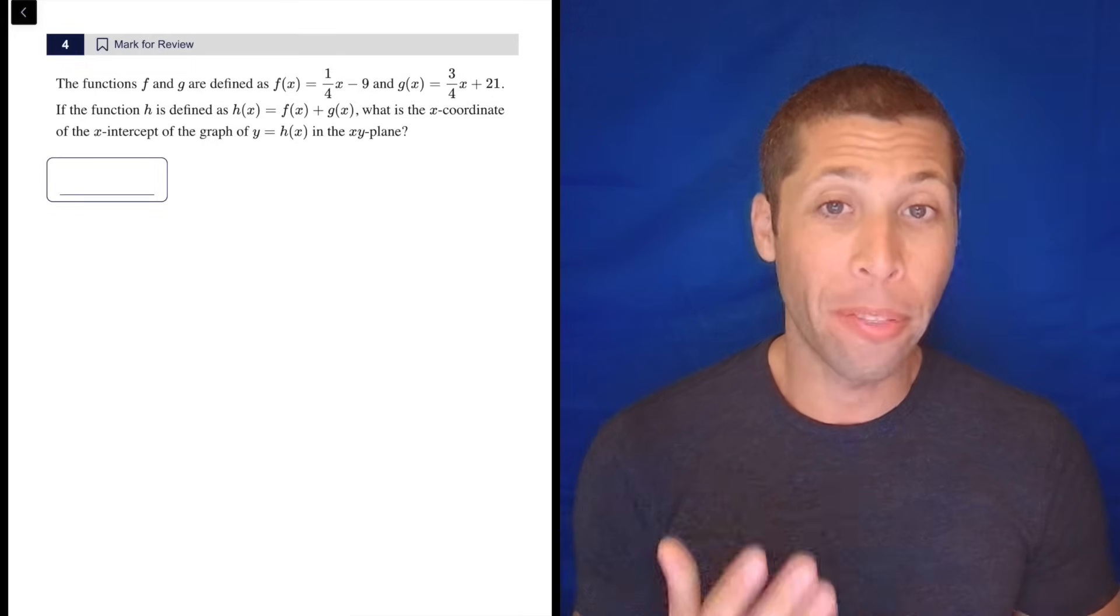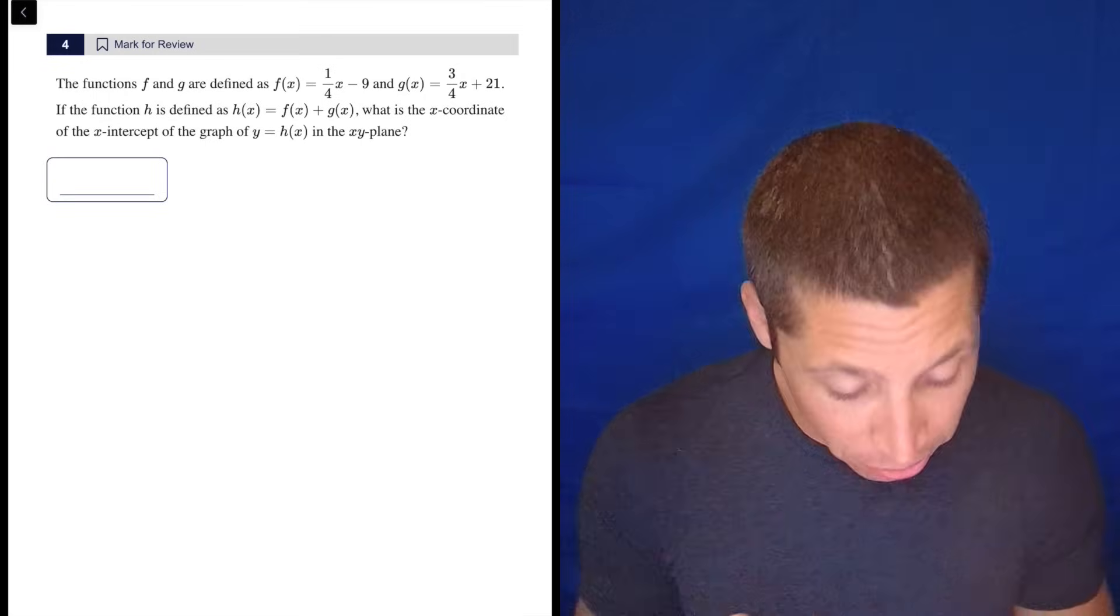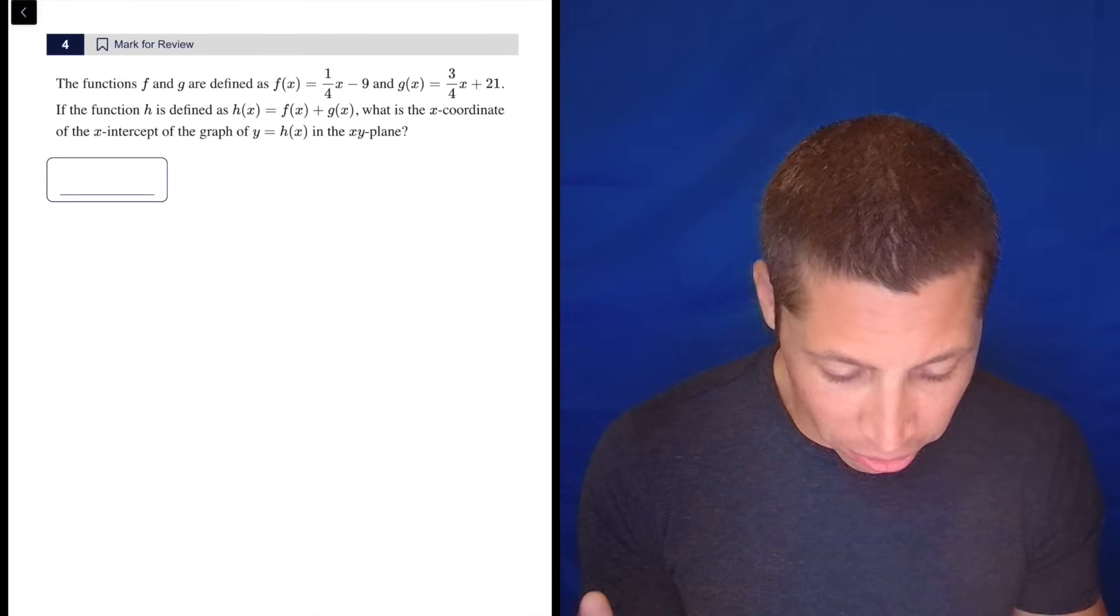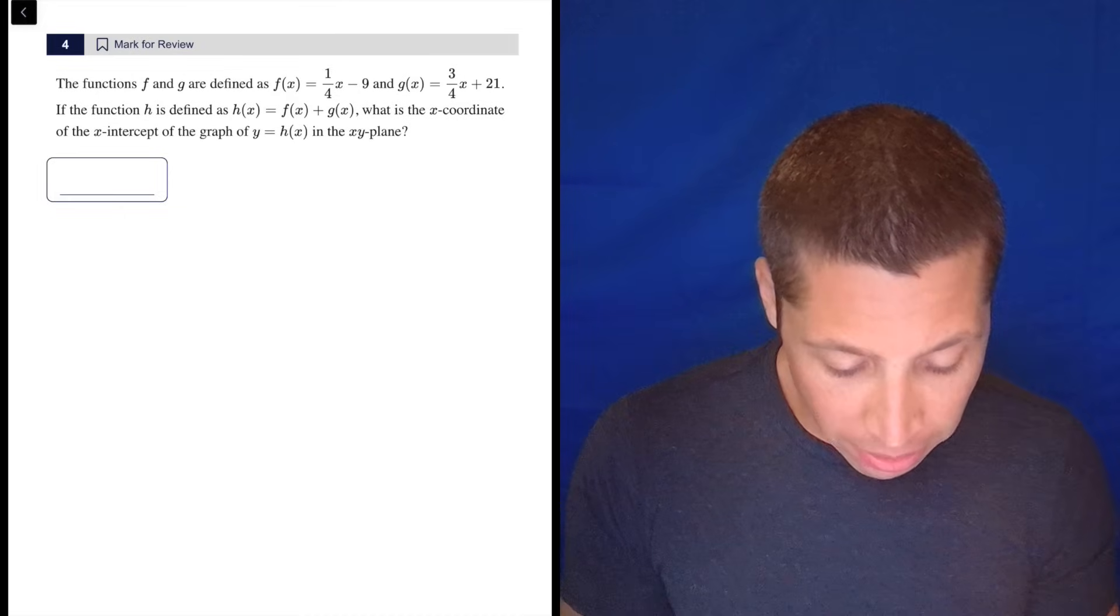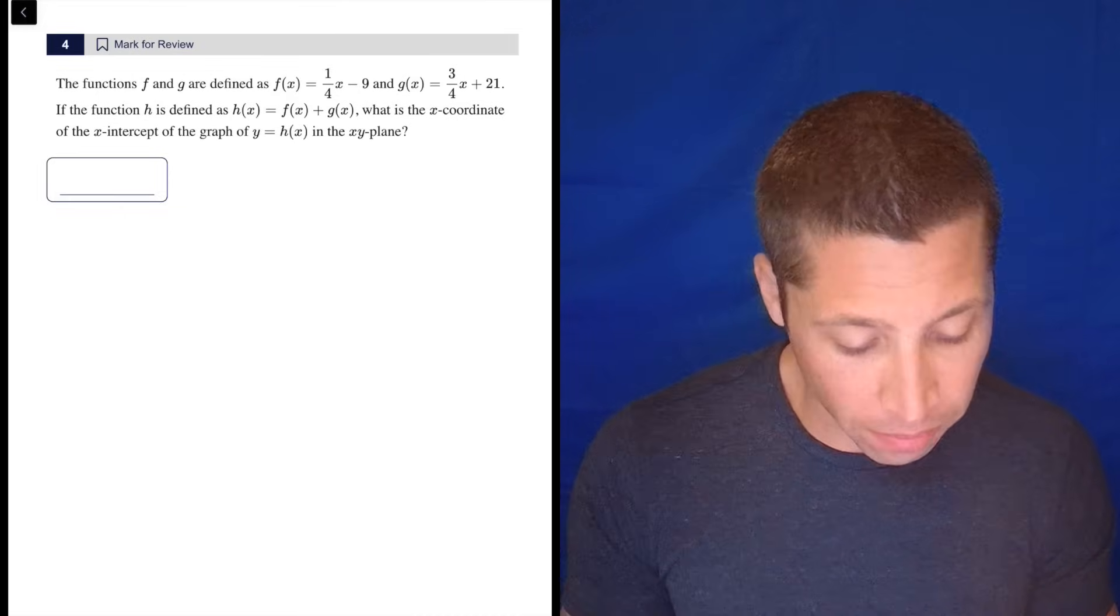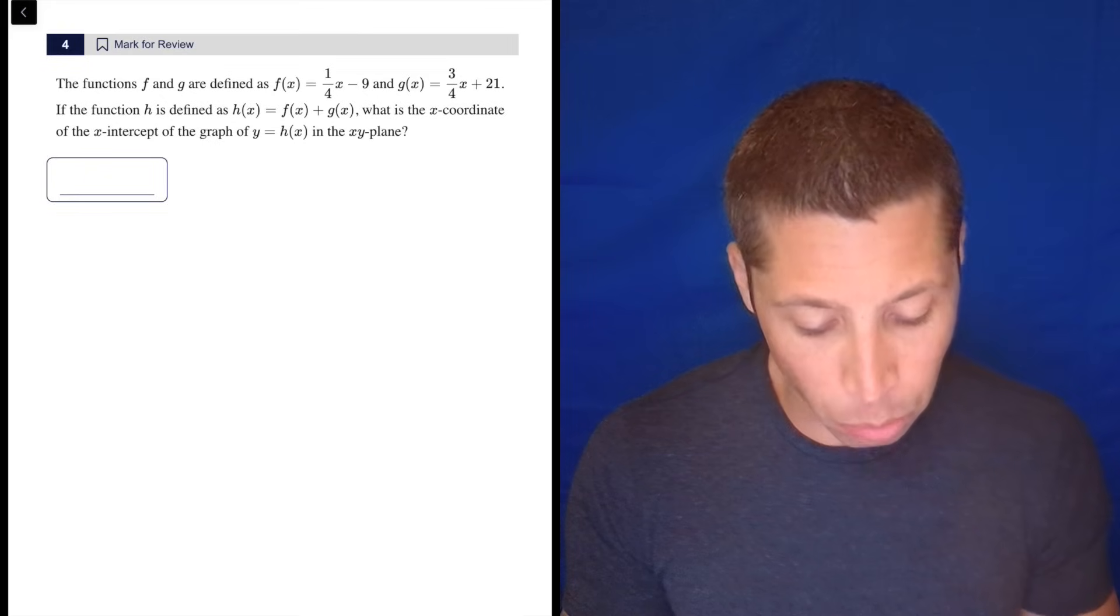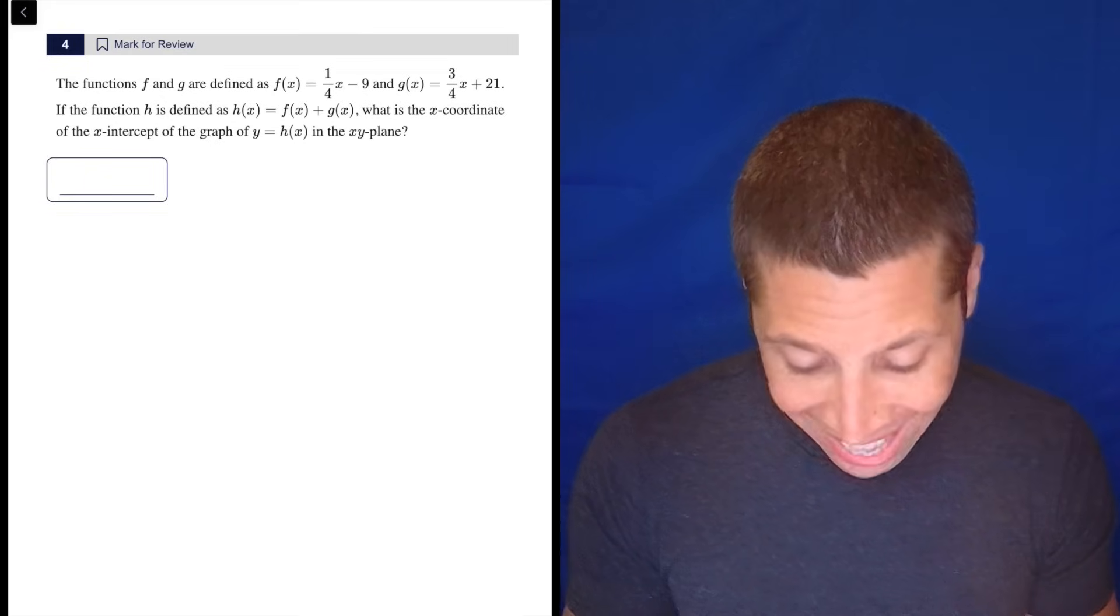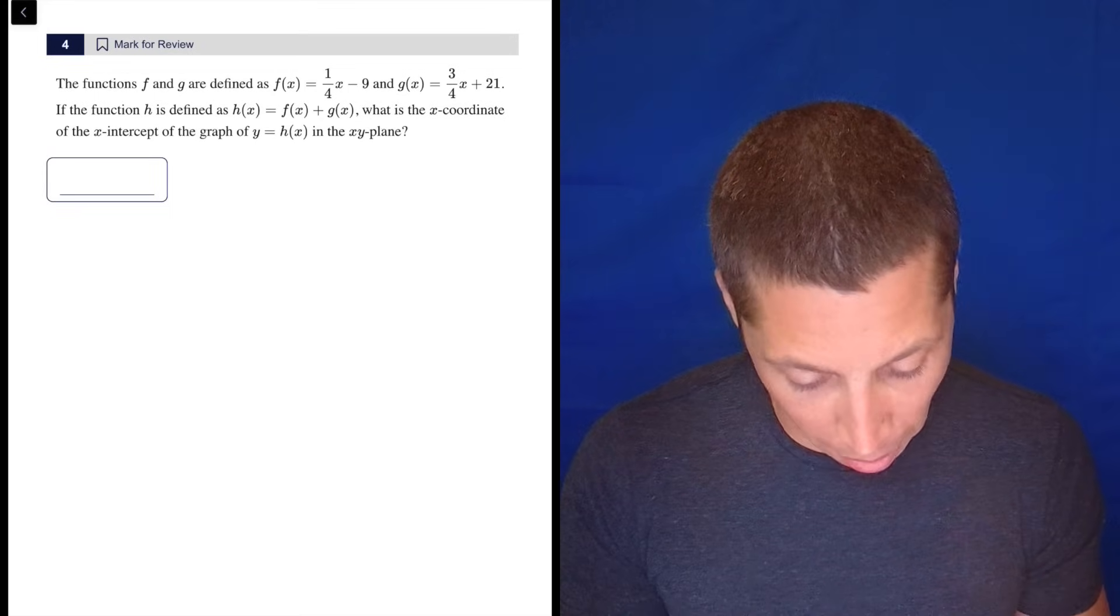Alright, I want to make it very clear how I would think about this if I encountered this on a real SAT. Obviously, I would read it first. I'd notice even before I read it, I got a lot of equations, so that's already scaring me. The functions f and g are defined as f(x) equals 1/4x minus 9, g(x) equals 3/4x plus 21. If the function h is defined as h(x) equals f(x) plus g(x), what is the x-coordinate of the x-intercept of the graph of y equals h(x) in the xy-plane?